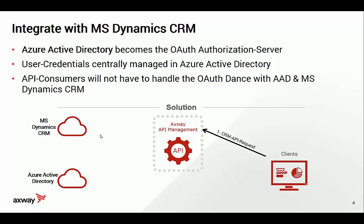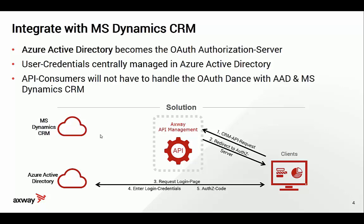The API management solution will recognize that it doesn't have an access token yet to call the CRM system, and that's why the client is redirected to the authorization server — Active Directory — and then the login page, which is the familiar Microsoft login page, is returned. The user can enter their login credentials, and then we get back the authorization code, which is part of the OAuth flow. The user has only sent credentials to Active Directory, which is the most important part of the OAuth protocol. Once we have the authorization code, the client is automatically redirected via a callback URL to the API management solution, which then extracts the authorization code and exchanges it for the final access token needed to access the CRM API.